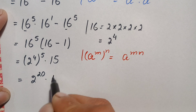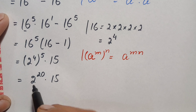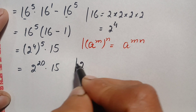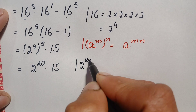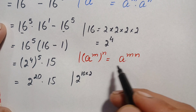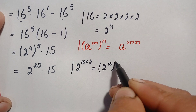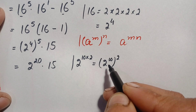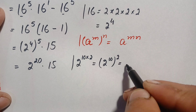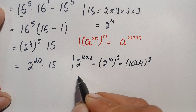Now we find the value of 2 to the power 20. We write 20 as 10 times 2, so 2^20 = (2^10)^2. The value of 2 to the power 10 is the well-known number 1024, so this becomes 1024 whole squared.